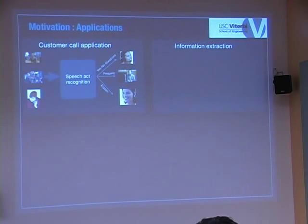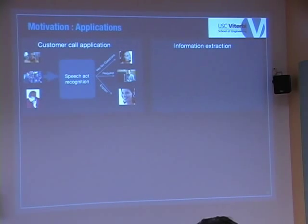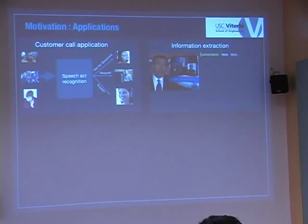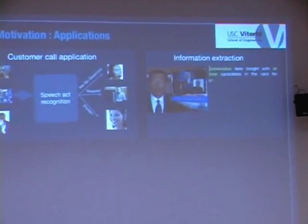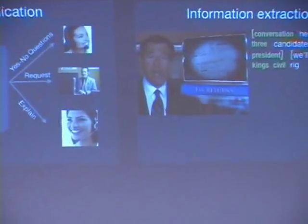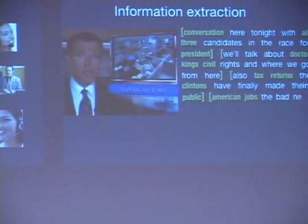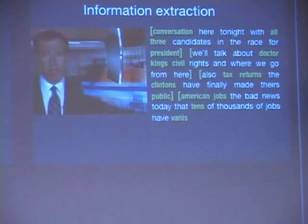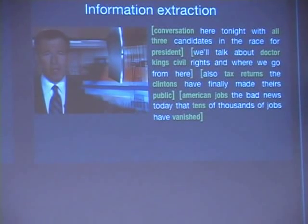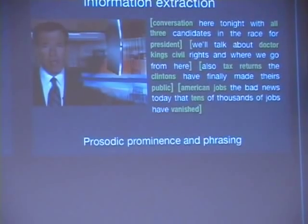The output you see is a system I developed as part of my PhD work. In the video, words marked in green are prosodically more emphatic words, and parentheses indicate prosodic phrasing using pause, duration, and other kinds of information. For example: 'Conversation here tonight with all three candidates in the race for president. We'll talk about Dr. King's civil rights and where we go from here. Also, tax returns. The Clintons have finally made theirs public. American jobs. The bad news today, tens of thousands of jobs have vanished.'